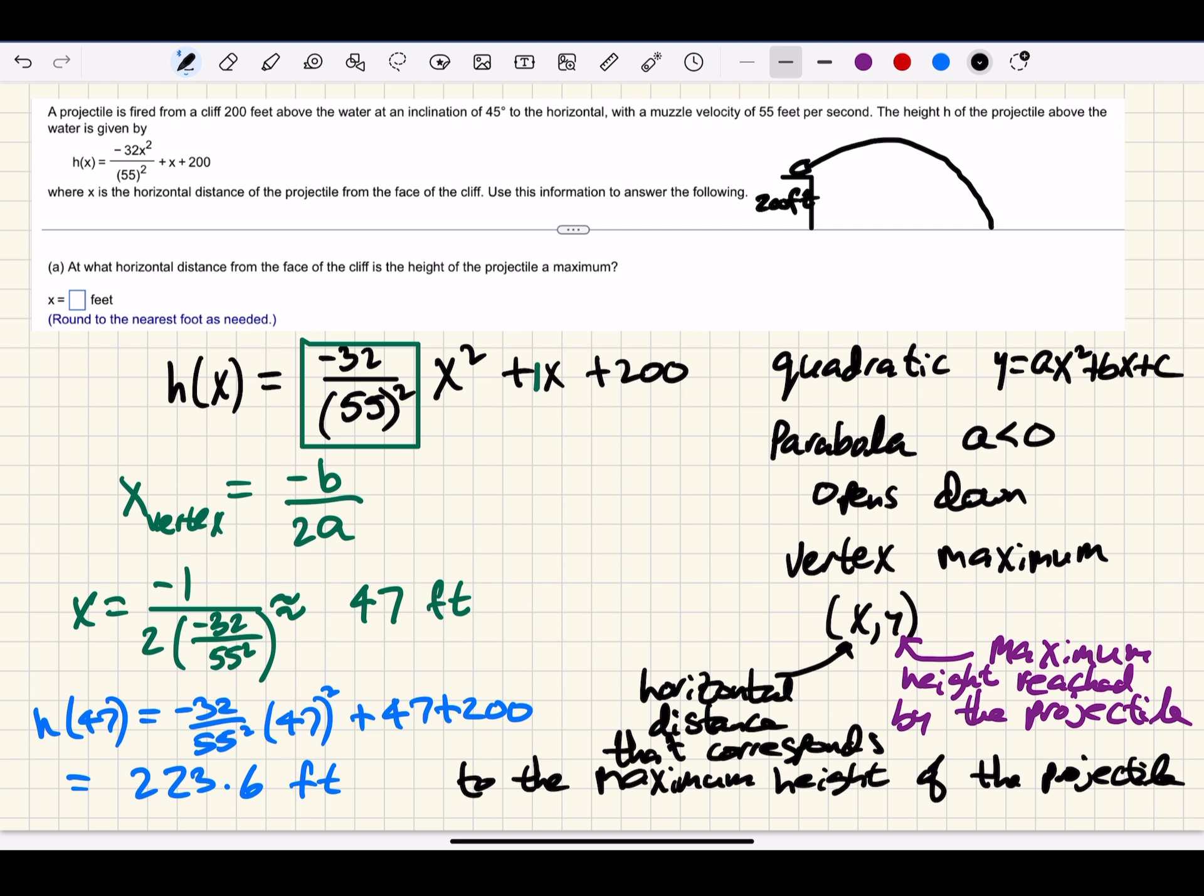We could find the horizontal distance traveled by the projectile before it hits the water by substituting zero in for the height. So with our function, we will let h(x) = 0 when the height is zero, and then solve for x, the horizontal distance that corresponds to that height of zero.